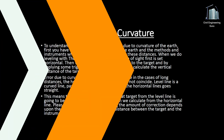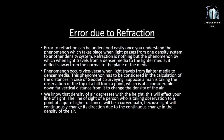Error due to refraction can be understood once you understand the phenomenon which takes place when light passes from one density medium to another. Refraction is the phenomenon by which when light travels from a denser medium to a lighter medium, it deflects away from the normal to the plane of the media, and vice versa when light travels from a lighter medium to a denser medium. This has to be considered in the calculation of distances in geodetic surveying. Suppose a man is taking the observation of the top of a hill from a point at a considerable vertical distance below it.